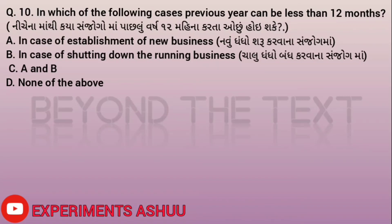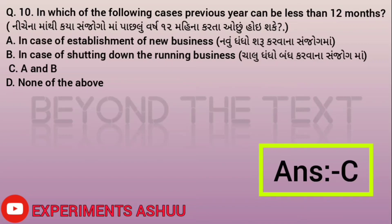Question ten: In which of the following cases can the previous year be less than 12 months? Generally a previous year is 12 months, but options are: A - in case of establishment of a new business, B - in case of shutting down a running business, C - A and B both, D - none of the above. The answer is C, both A and B.